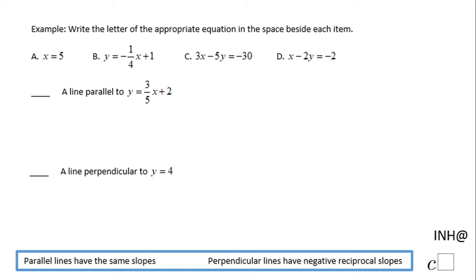Welcome or welcome back to I Need Help at Cisco. In this example, we need to write the letter of the appropriate equation in the space beside each item. So we have options A, B, C, and D, and we need to find a line that is parallel to this one.